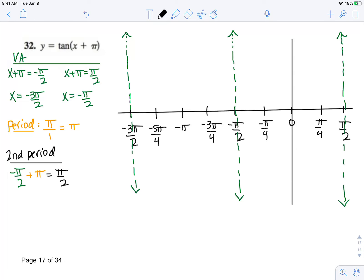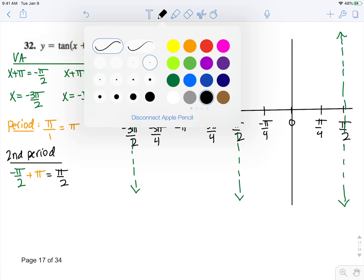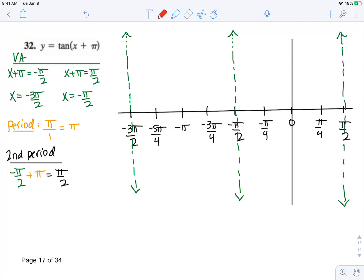You should start to see a pattern. So we know in the middle of each of these periods, we cross 0. And since there is no reflection, we're only going to go up our amplitude, which is 1. So we go up 1, down negative 1.